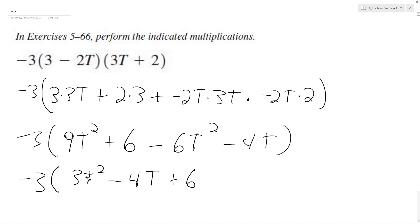Actually, I made a mistake. This should be... that should have been just 9T. So it becomes negative 6T squared plus 5T plus 6. And then distribute across.